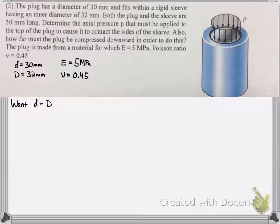So we want the radii, or the diameter of these two to be the same. So how do we do that? Well, we know that means the change in the x direction for this plug will be 2 millimeters, because we're going from 30 to 32, the difference is 2. And now we want them to be the same.